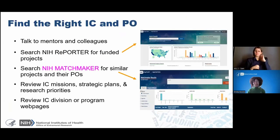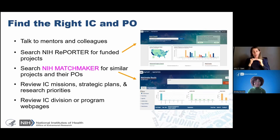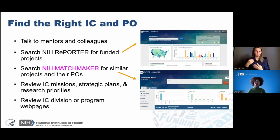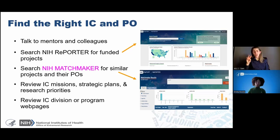How do you find the right program officer? First, talk to your research mentors and colleagues — they probably have great suggestions. There's also NIH Reporter, where you can find information on funded research, which ICs are funding it, and according to which activity codes — fellowships, career development awards, research project grants, and so forth.